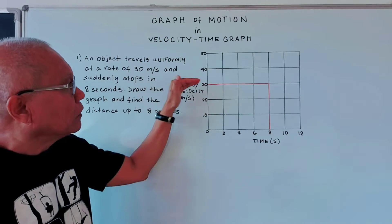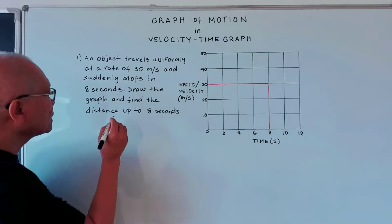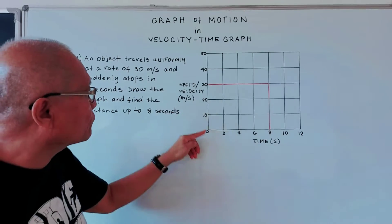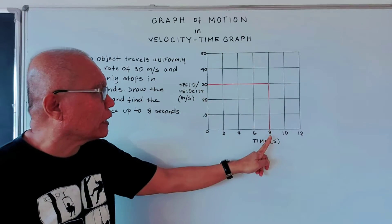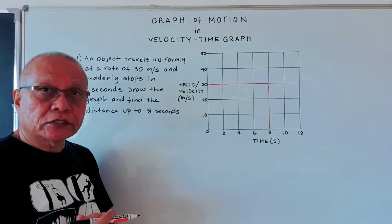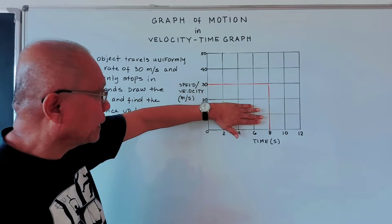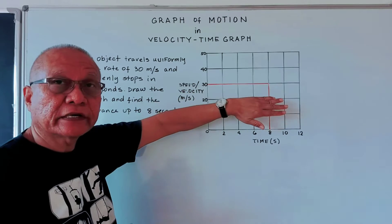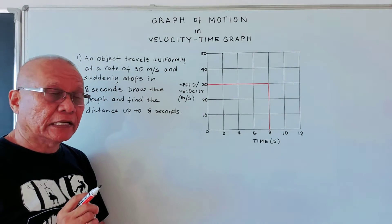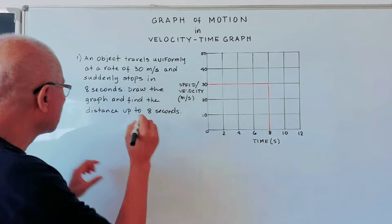Now let us find the distance. What is the distance traveled by our object from zero time up to 8 seconds? Distance is the area under the curve — this region is our area under the graph. The area of a rectangle is length times width, or base times height.